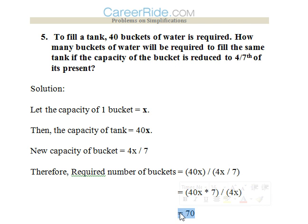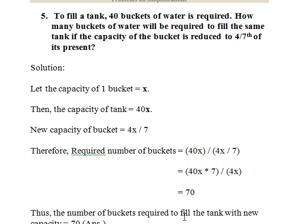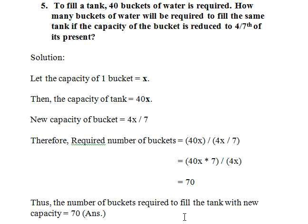Calculating: 40x × 7 ÷ 4x = 70. So 70 buckets are required to fill the tank with the reduced bucket capacity. These are the five kinds of questions which can be asked from this chapter. I hope this video proves useful to you. Thank you.